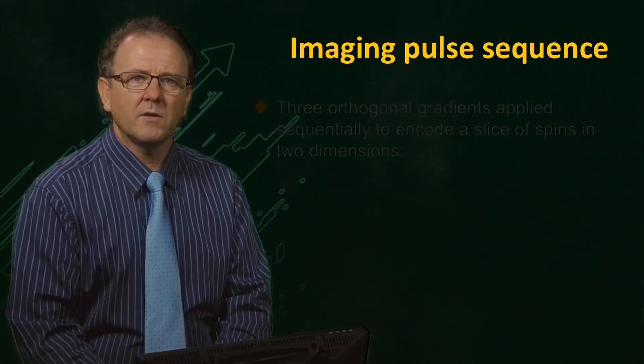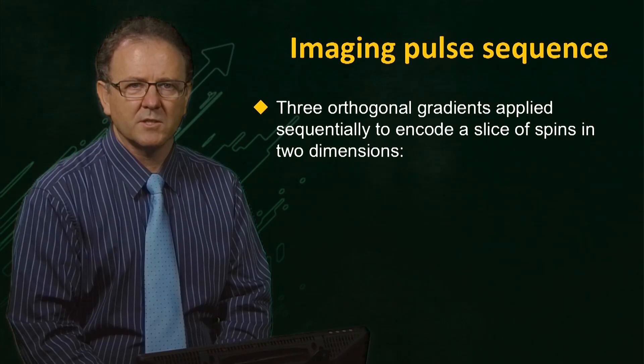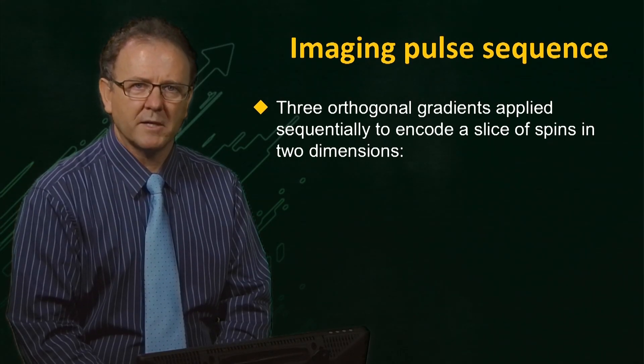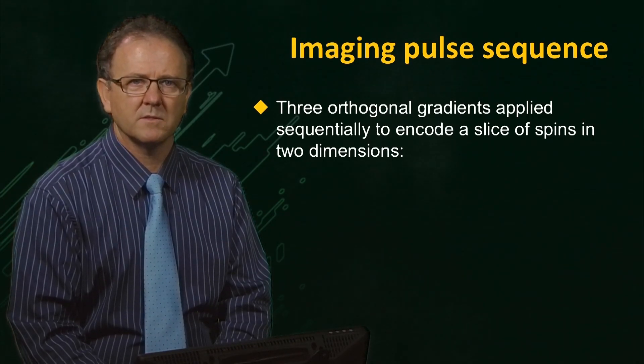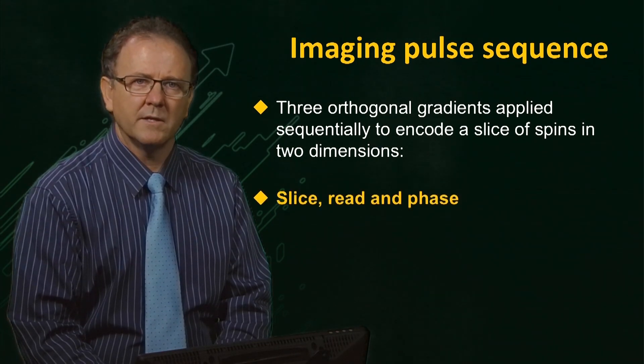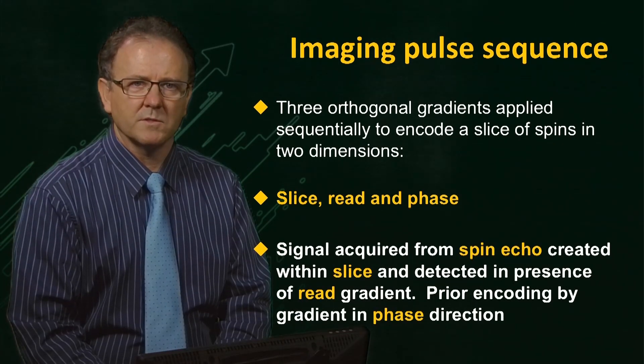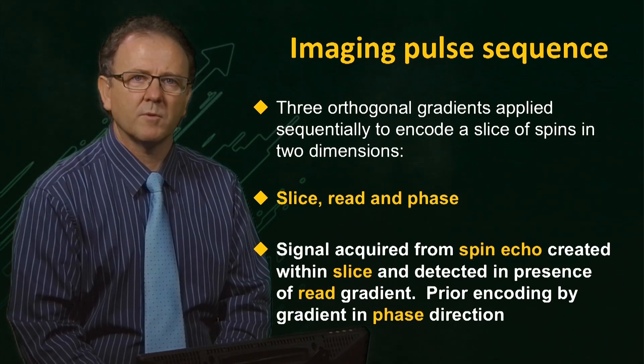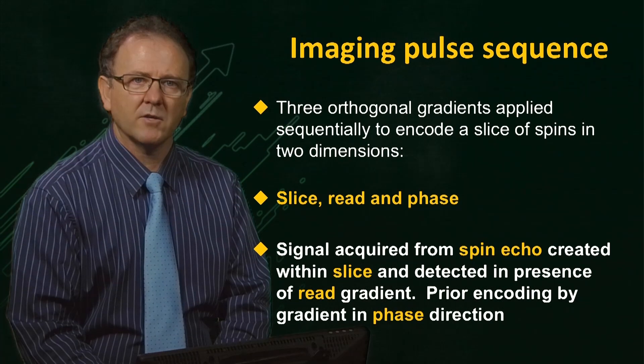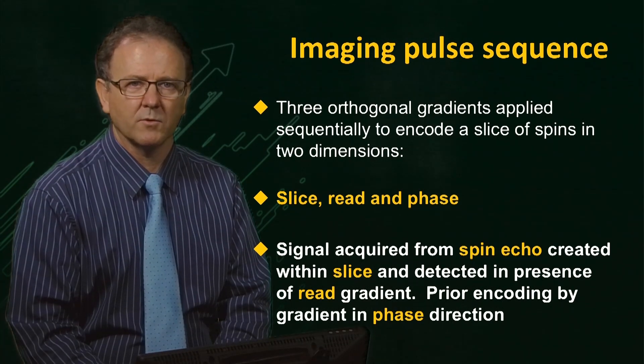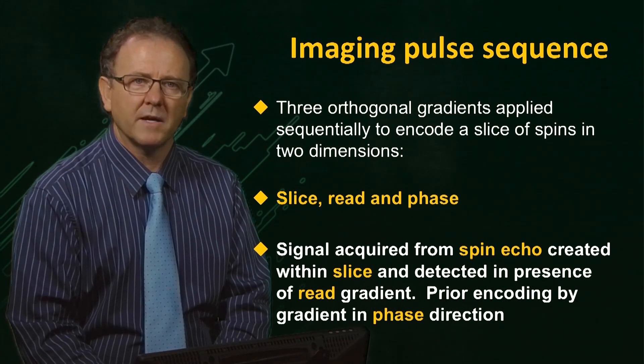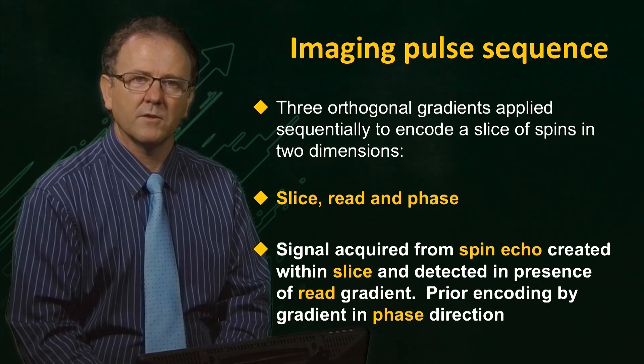We have seen that three orthogonal gradients can be applied sequentially to create a spatially encoded slice of spins. These are the slice, read and phase gradients. In most imaging pulse sequences, a spin echo is generated from a slice of spins and the echo signal is detected in the presence of a read gradient. The phase gradient encodes the signal in the third direction.